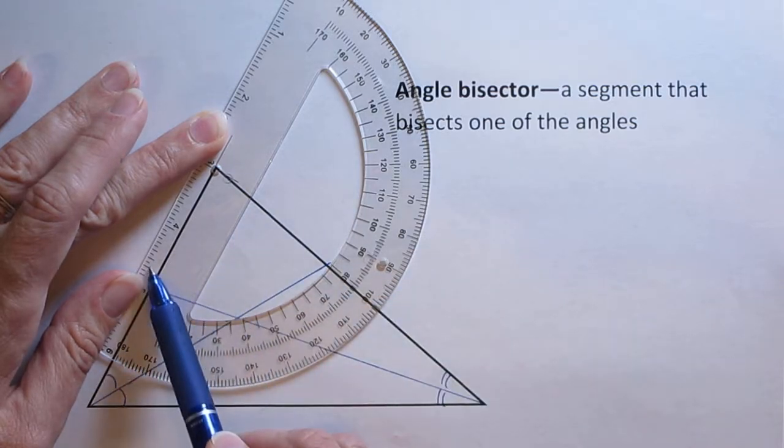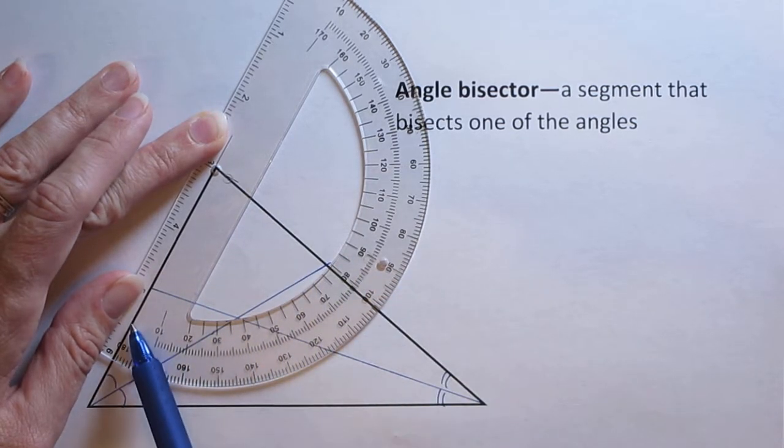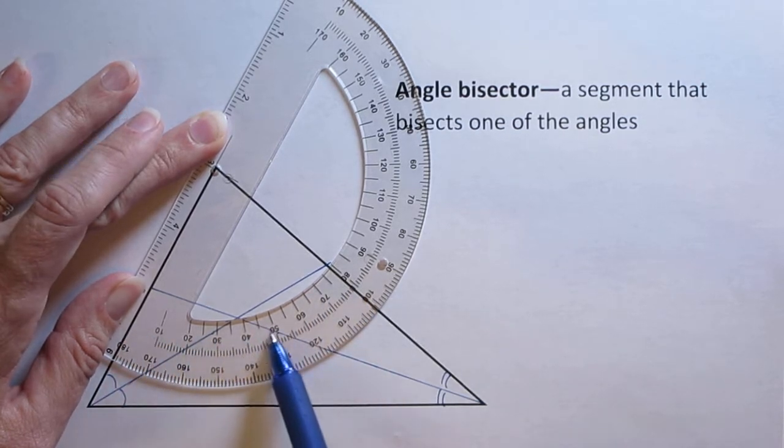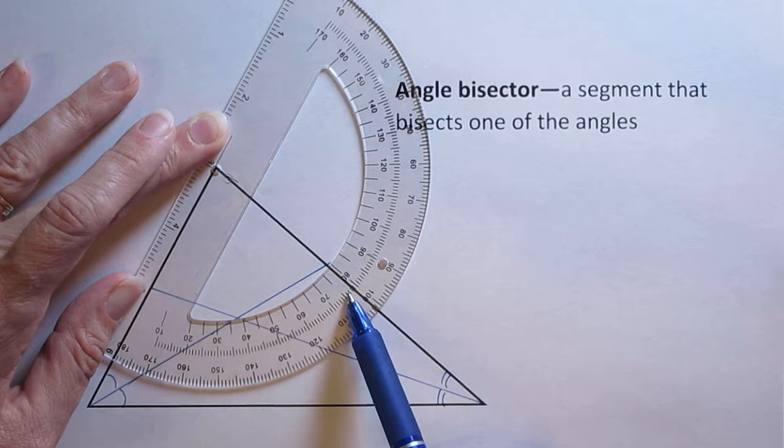Now I'm going to measure my angle from this way out. I'm looking for zero and starting with the smaller numbers going across this way. So 10, 20, 30 all the way over to here. It looks like I'm probably at about maybe 78 degrees.